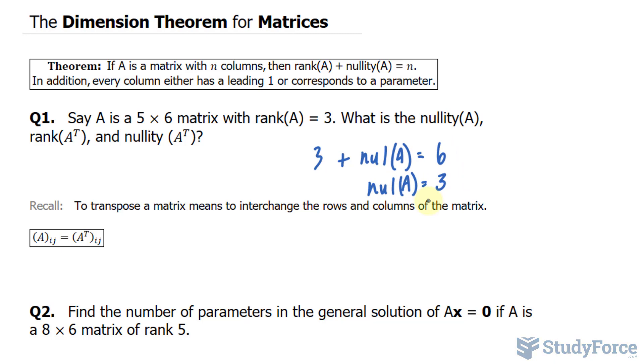This means that this matrix would have 3 parameters, or in other words, 3 variables without leading 1s after placing it in row echelon form.